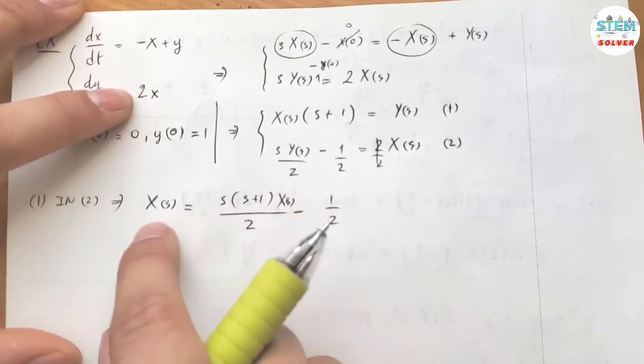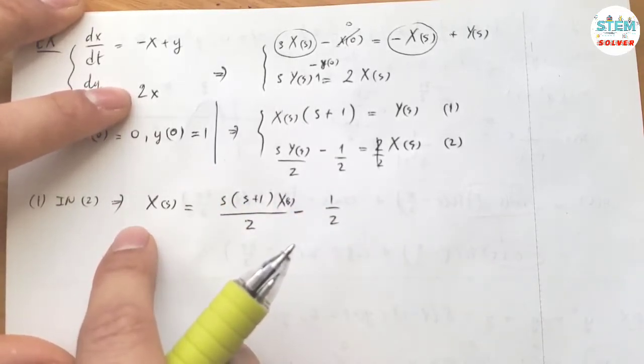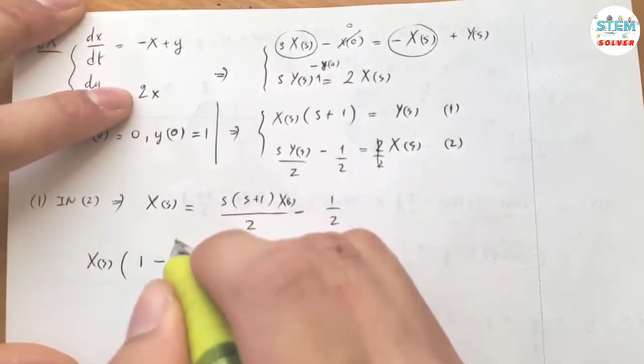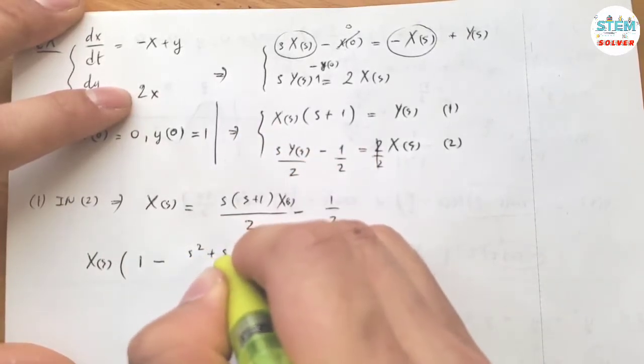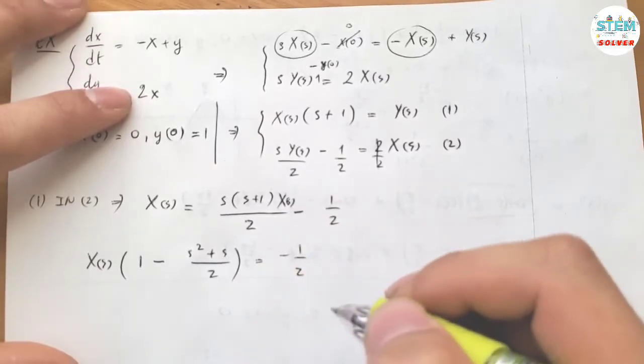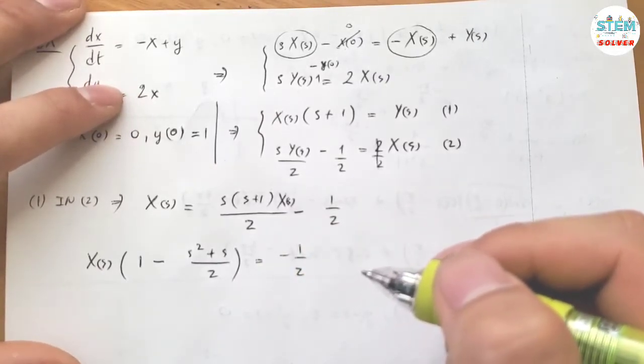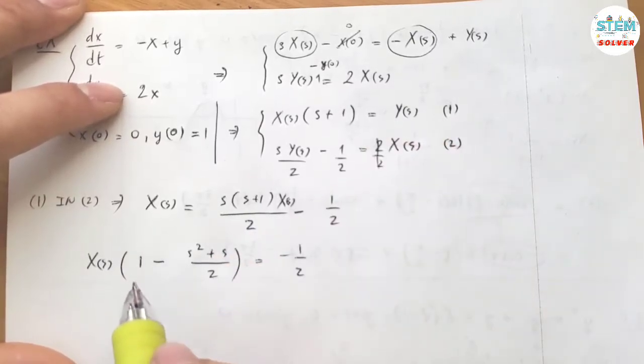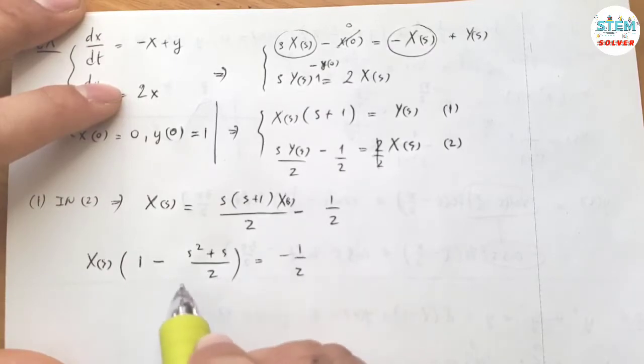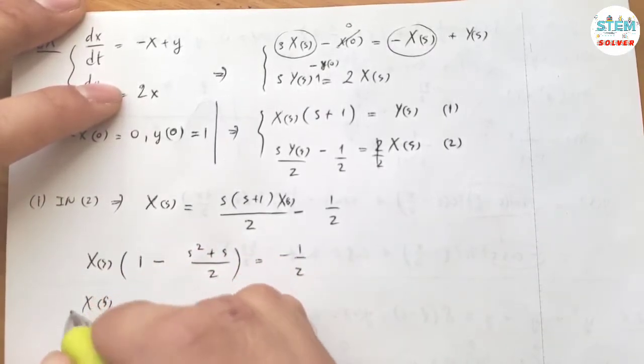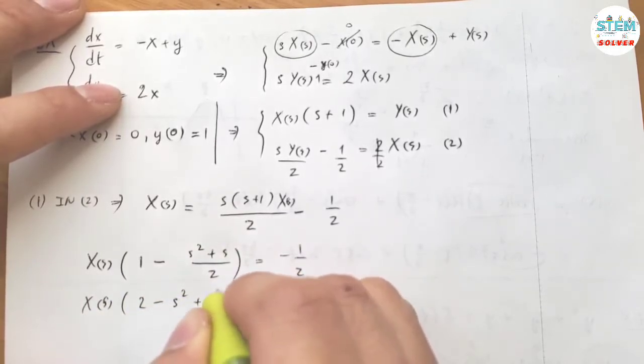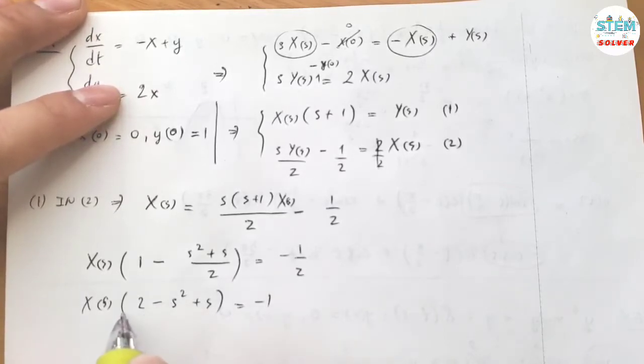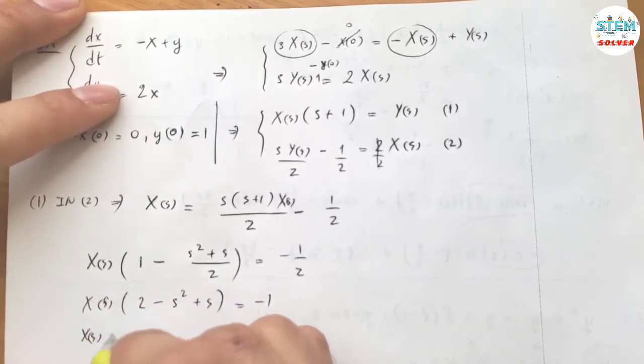Now, since the X of S is on both sides, I'm going to move it to one side and factor it out. So let's see, I have X of S times 1 minus, I want to distribute this out at the same time, negative 1 half. Let's see what you have left. Now, I'm going to multiply by 2 to get rid of the fraction here. So 2 minus S squared plus S equals negative 1. And then, I'm going to rearrange this and factor out the negative 1.